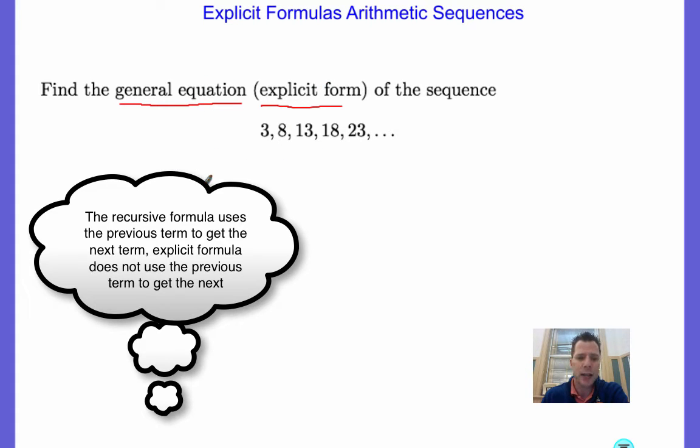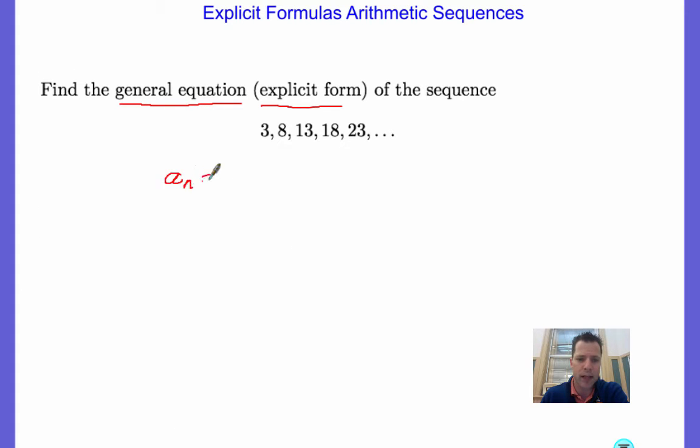And remember, the idea behind this, the equation behind this general form is a sub n equals the first term plus n, the term you're looking for, minus 1 times the common difference.